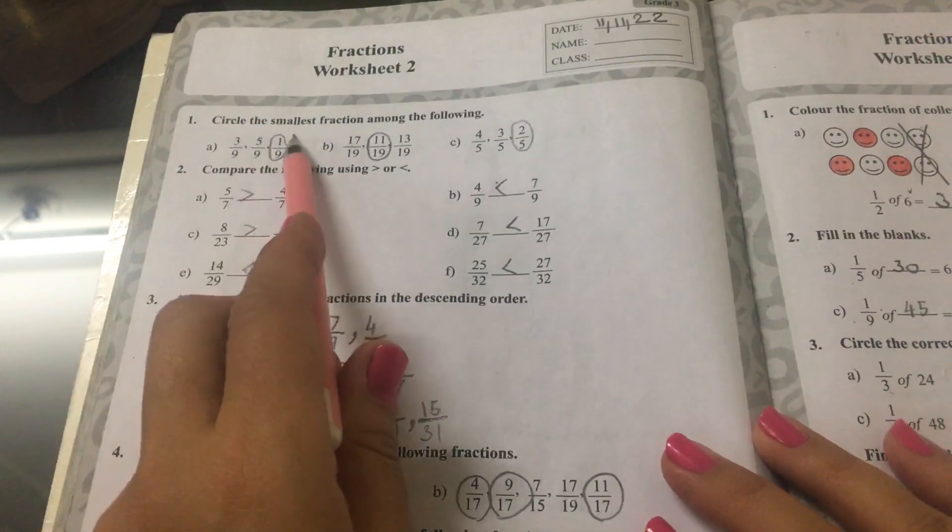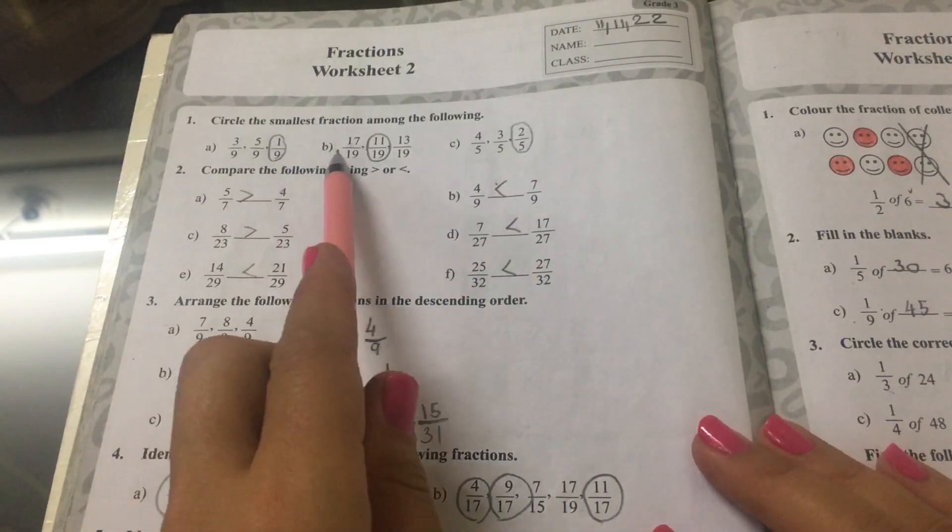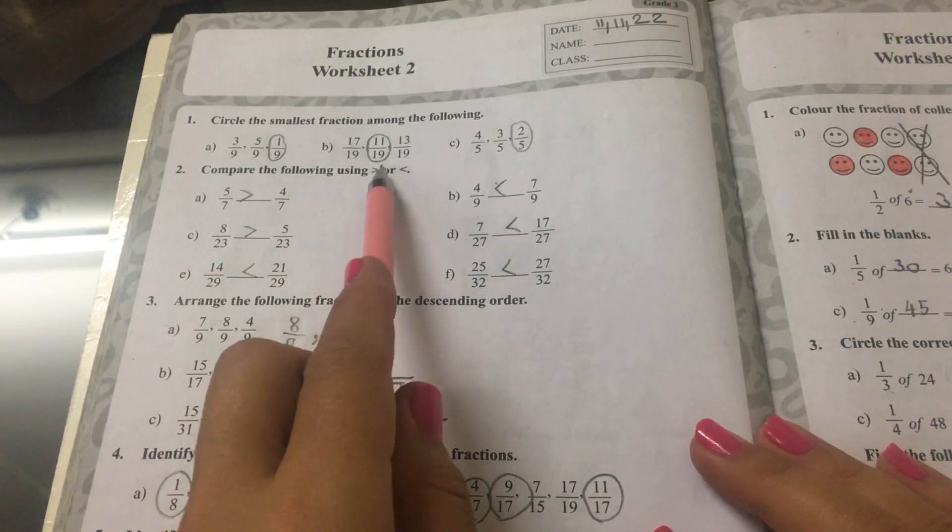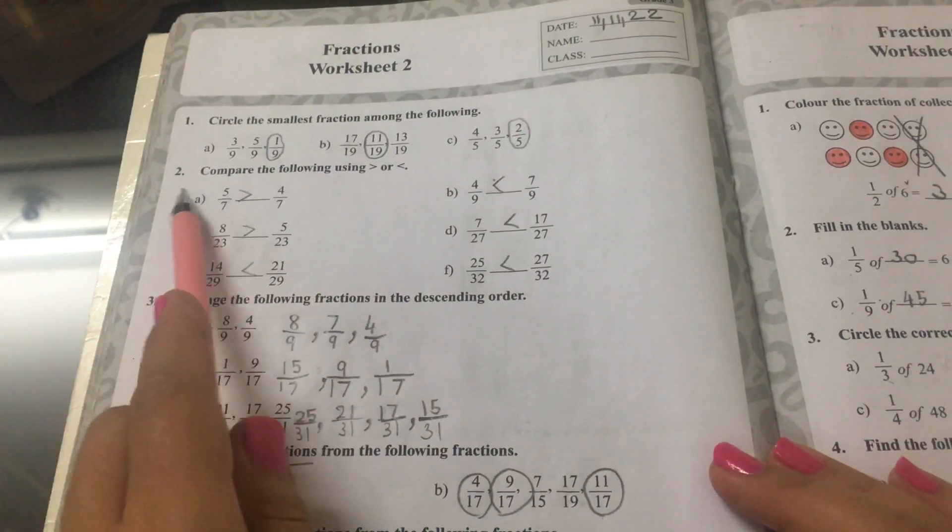Fraction worksheet number 2. Circle the smallest fraction among the following. A is 1 ninths, B is 11 ninths, and C is 2 fifths.